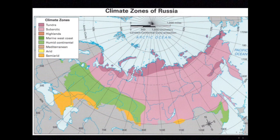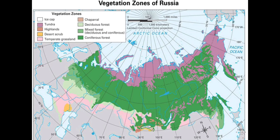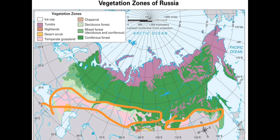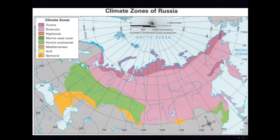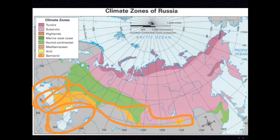Last but not least, you have the steppe climate zone — also called semi-arid on this map, same thing. The steppe zone has temperate grassland areas with dry summers and long, cold, dry winters, marked in pink on the vegetation map. The steppe climate zone is in the southern part of Russia, bordering the Black and Caspian seas, with thin strips stretching along other parts of the area, especially along the Kazakhstan border.